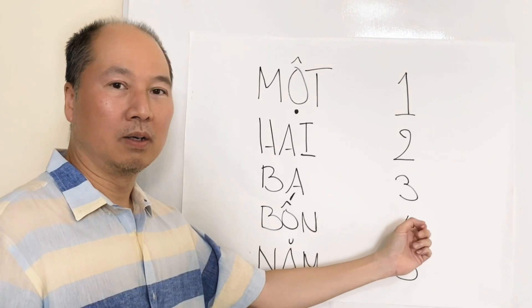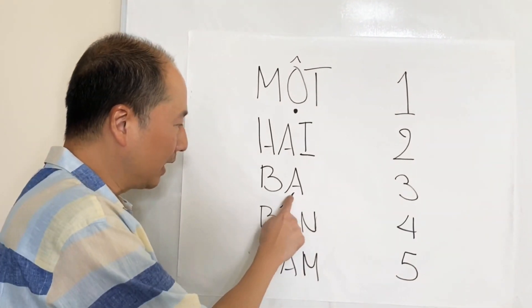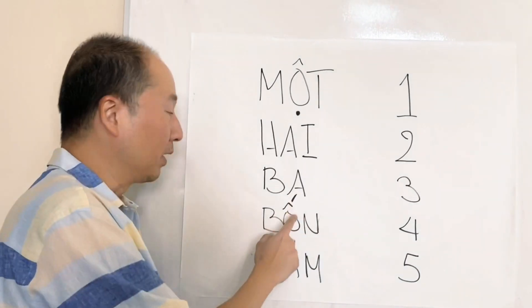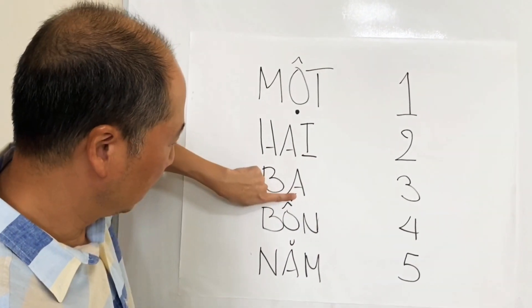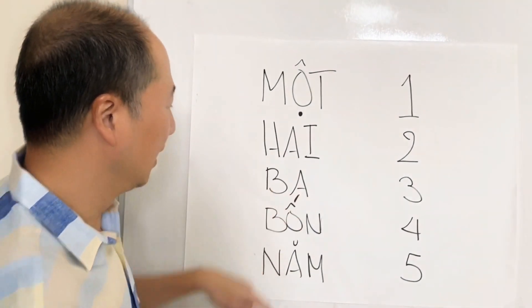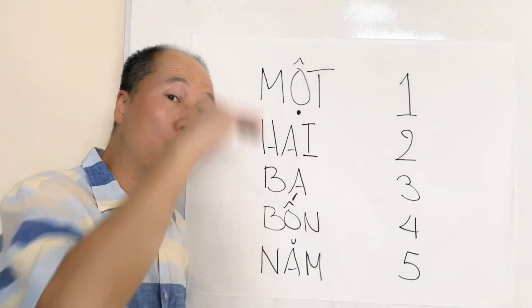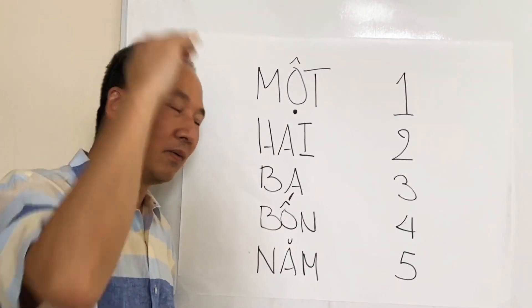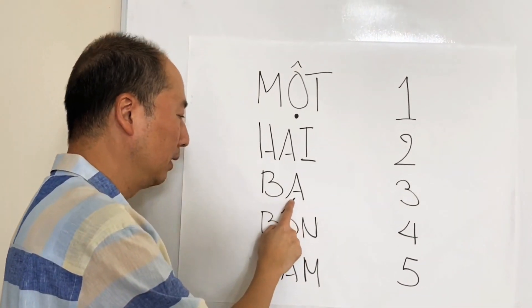Bốn is four. Now, again, this has this little thing above it. If we didn't have this, it would pronounce Ba, like in English Ba, but because we have this, it's pronounced Bốn.